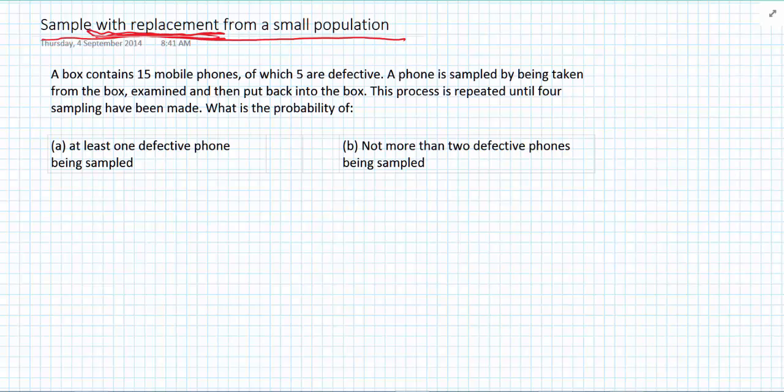I'll give you a chance to read the question, and then I'll go through the answer. Okay, so again, let's go through the problem and highlight the important bits. First of all, we have 15 mobile phones in the bag, and five are defective. A phone is sampled by being taken from the box, examined and put back into the box. This process is repeated until four sampling have been made.